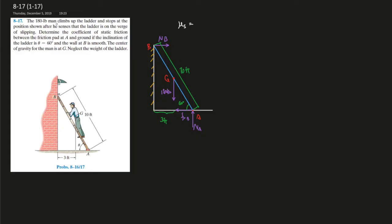The 180 pound man climbs up the ladder and stops at the position shown after he says that the ladder is on the verge of slipping. Determine the coefficient of static friction between the friction pad at A and ground if the inclination of the ladder is theta equals 60 degrees and the wall at B is smooth. The center of gravity for the man is at G. Neglect the weight of the ladder.